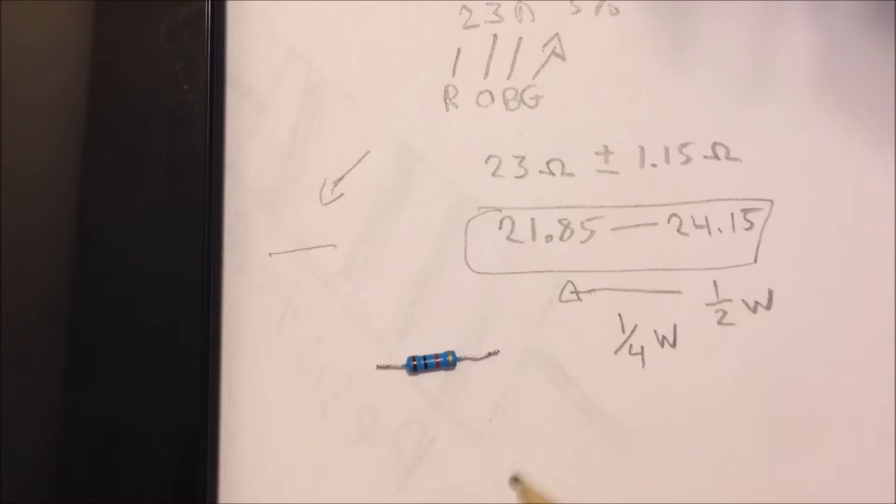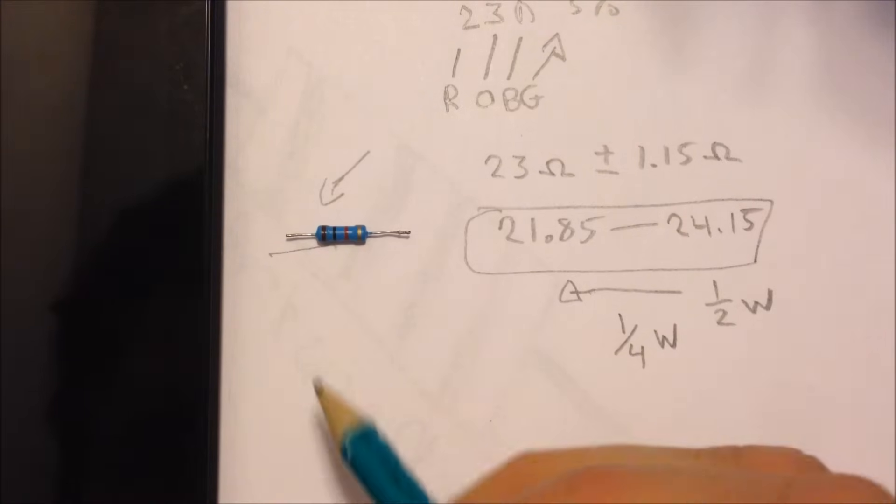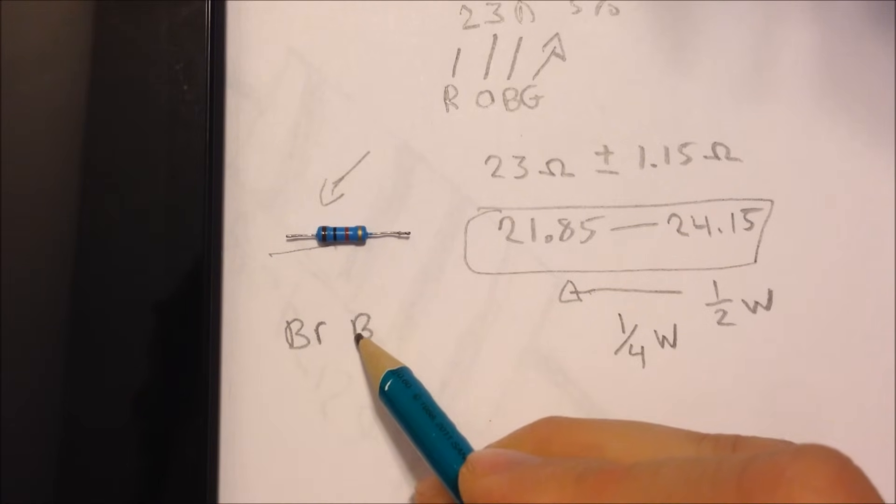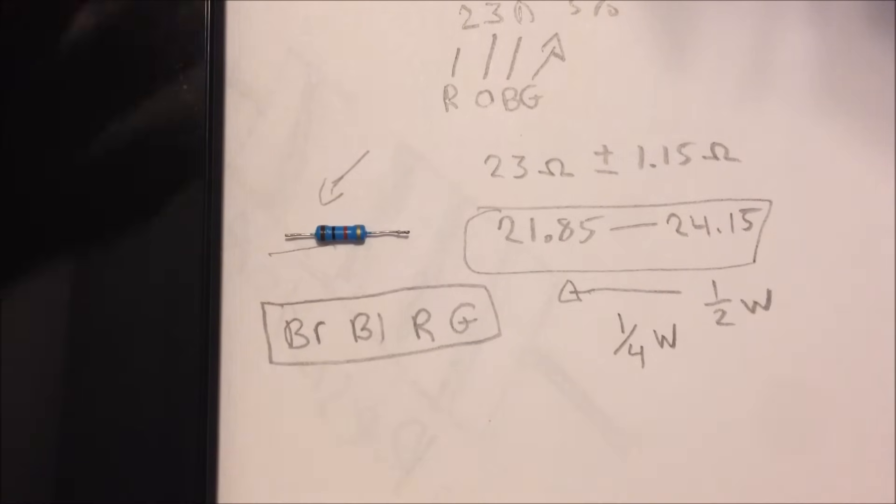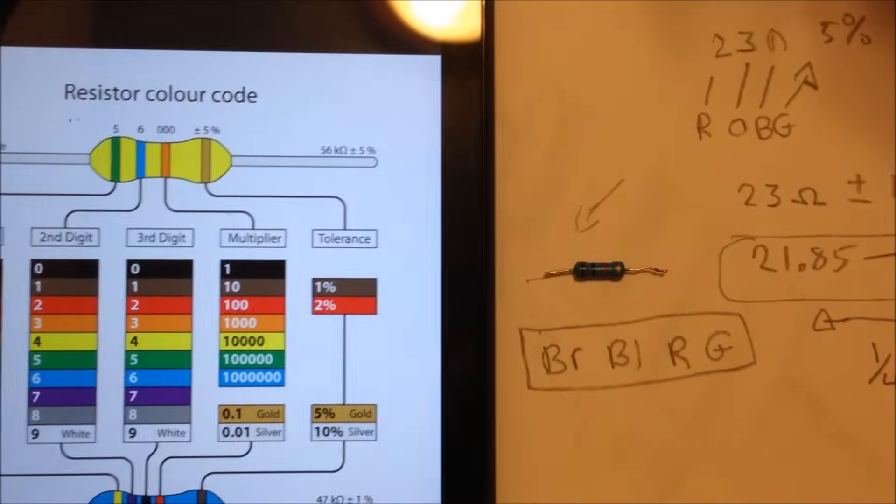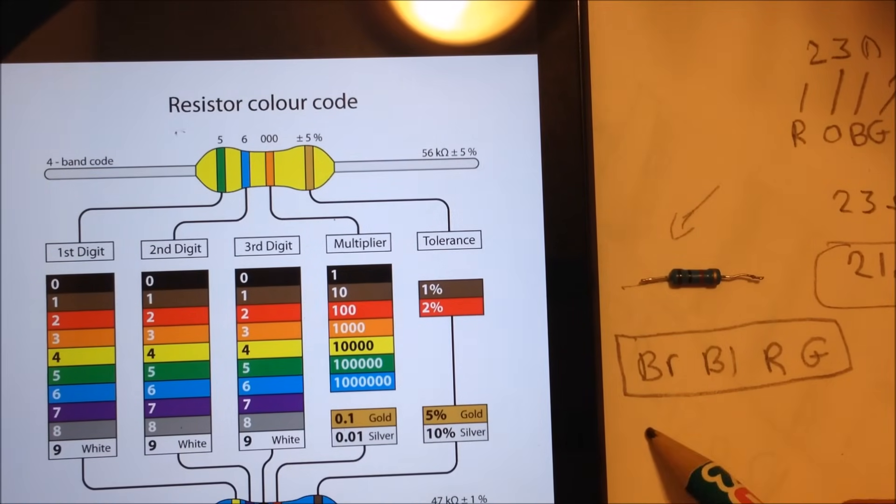But while that one's here, let's figure out the value of him. So if I line it up again, I have my gold on the right, looking at this backwards. And then the colors here, if we can see them, we got brown, black, red, and gold. So those are the colors we got for that resistor.